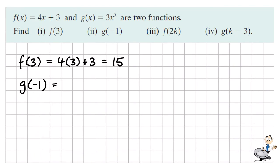g of negative 1 means we're substituting negative 1 in for x in the g function. This is 3.